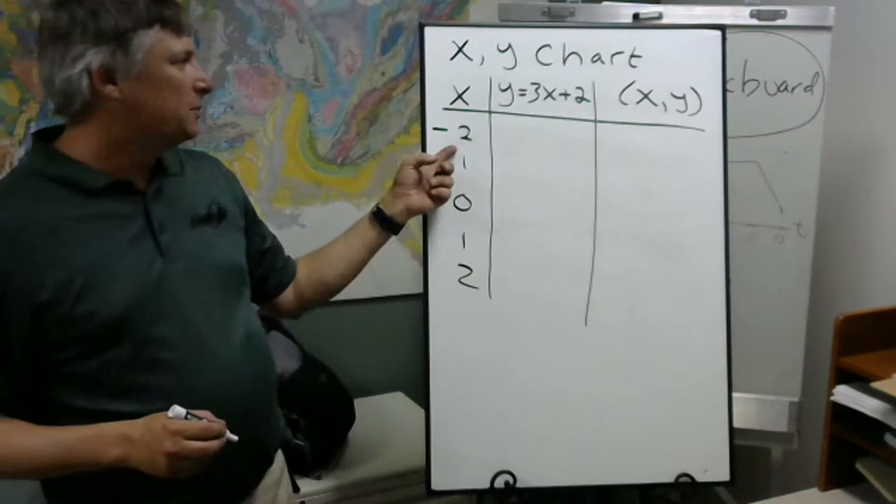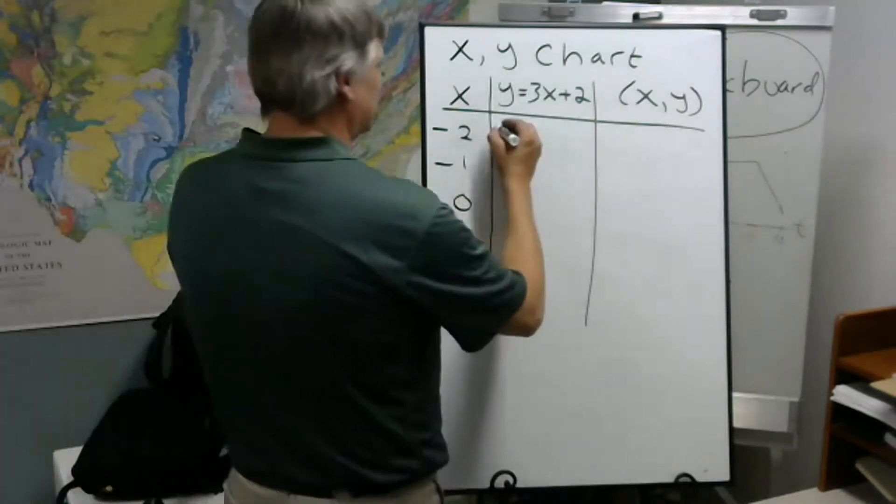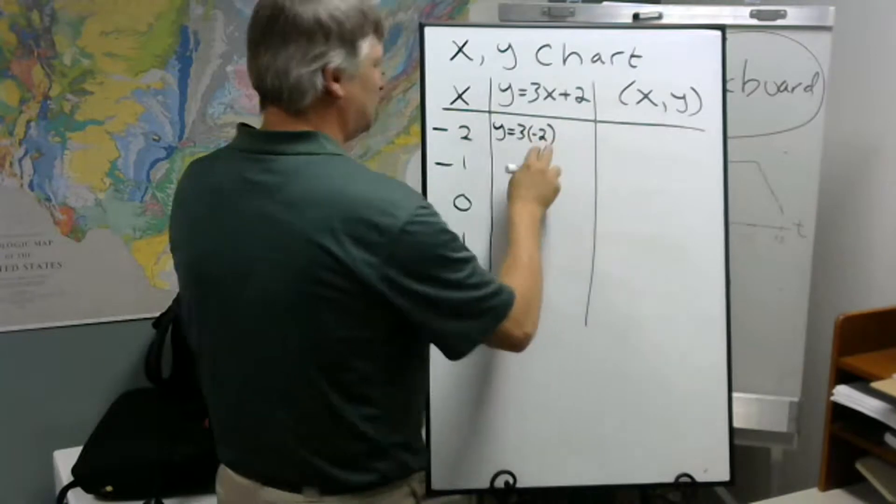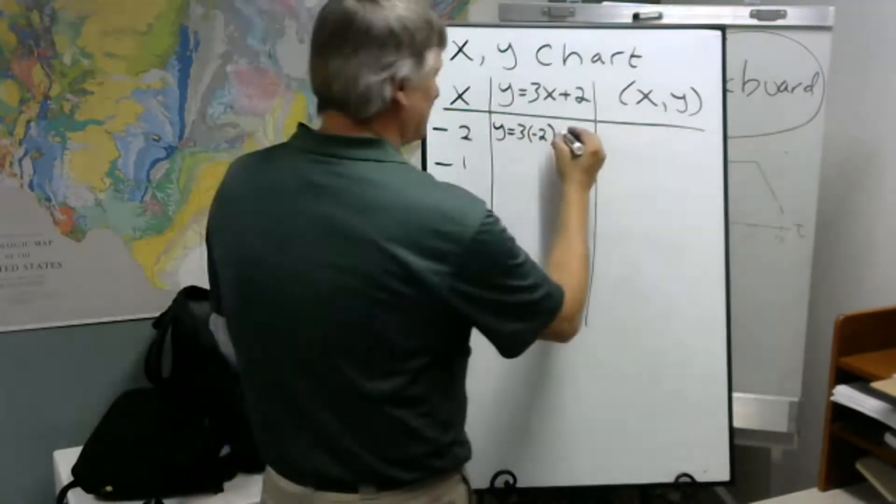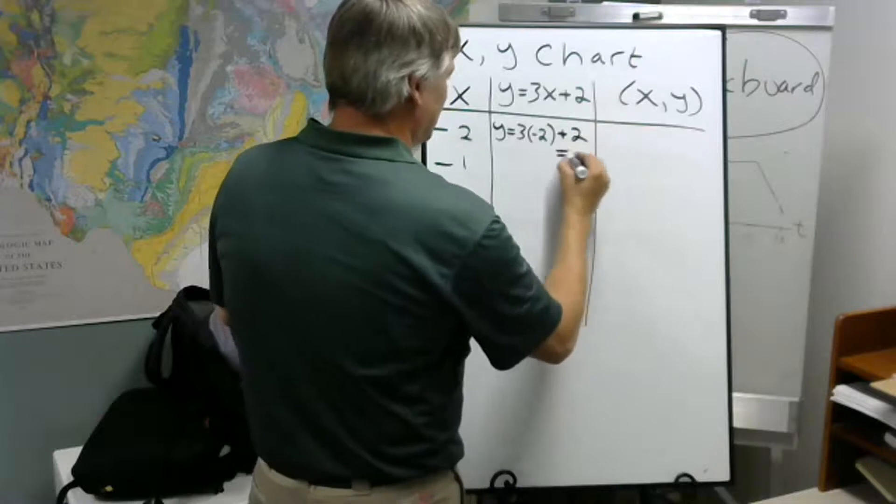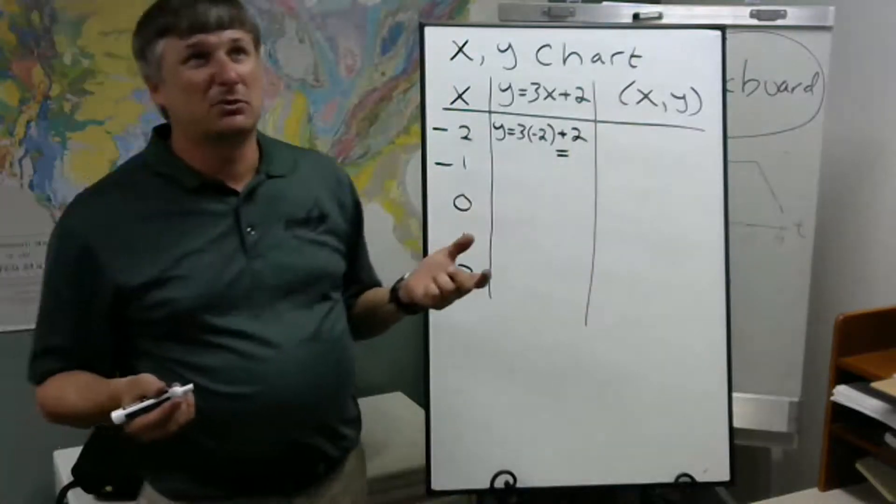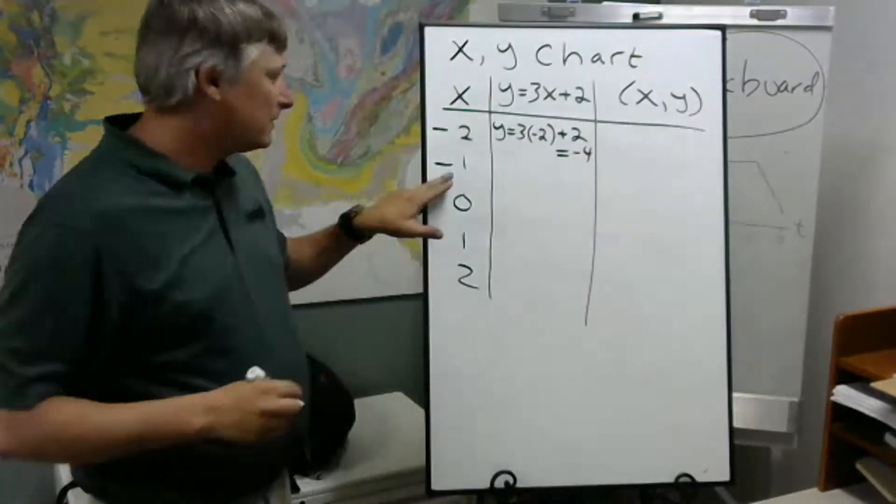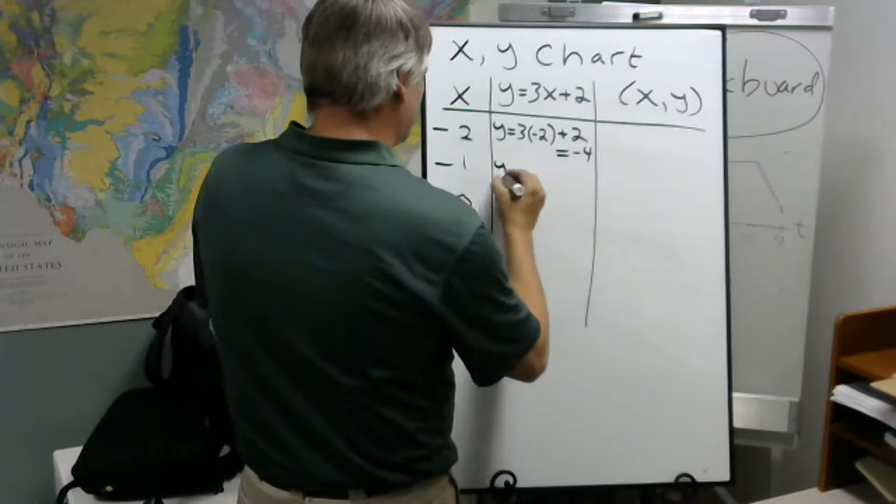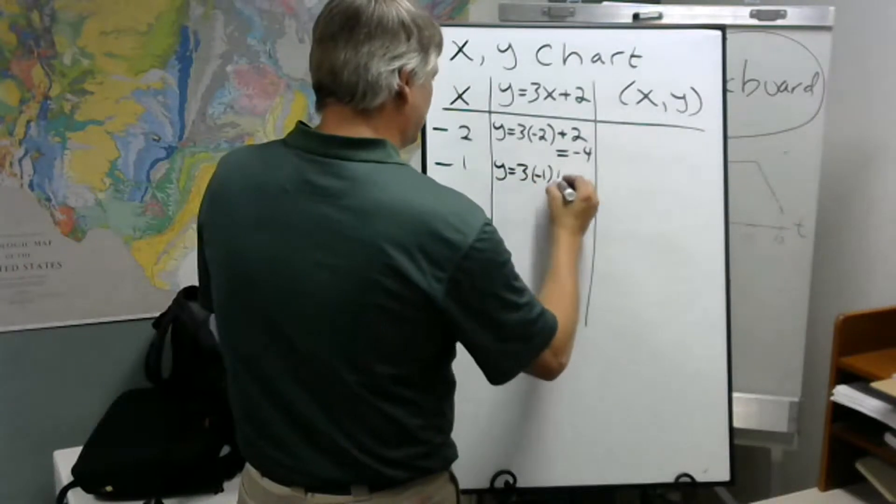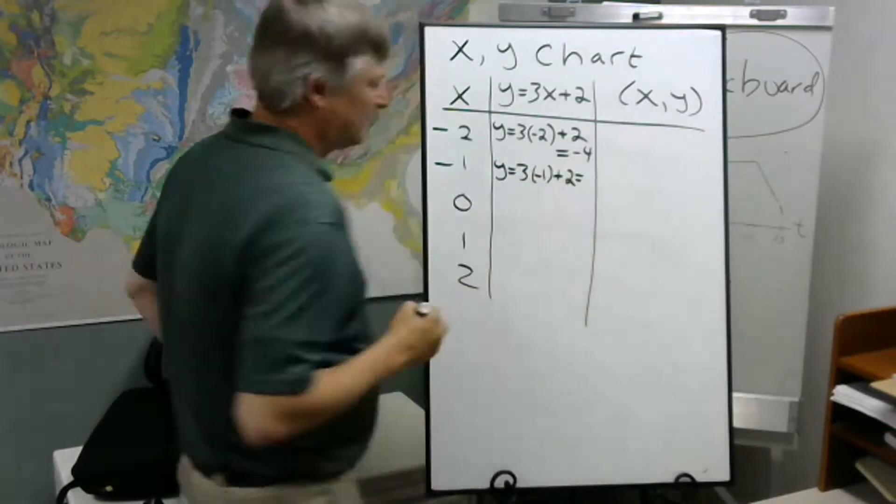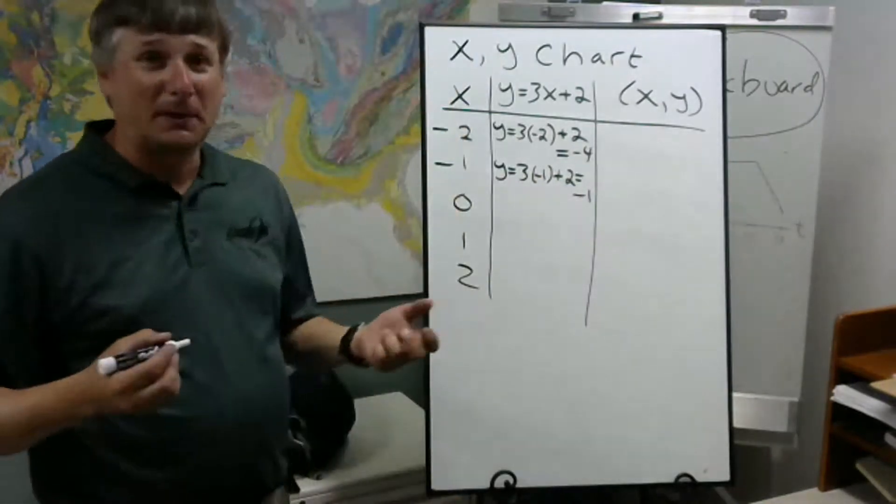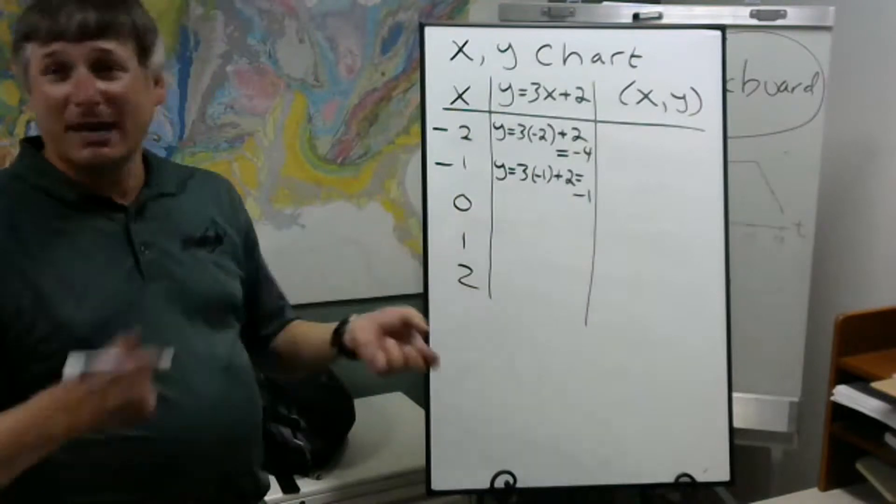When x is negative 2, what do we get for an output? So y equals 3 times negative 2 plus 2, and that comes out as negative 6 plus 2, negative 4. Now we're going to let x be negative 1. So y will be 3 times negative 1 plus 2, negative 3 plus 2, negative 1. Well, that's interesting: put in negative 1, you get negative 1.